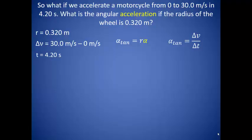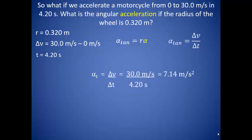We have an initial velocity of 0 and a final velocity of 30, which gives us a change in velocity of 30 meters per second. This divided by the time results in a linear acceleration of 7.14 meters per second squared. The angular acceleration is found by dividing that linear acceleration by the radius, which is 22.3 radians per second squared.